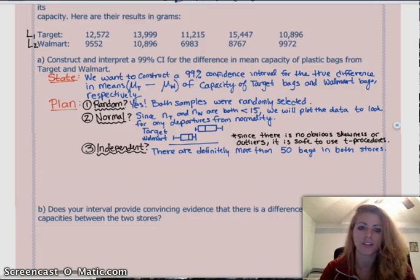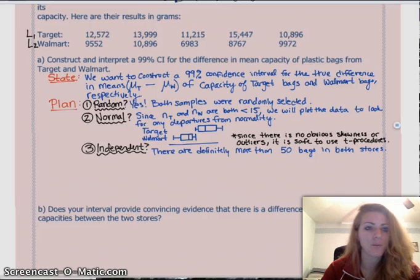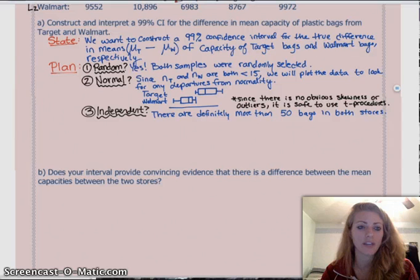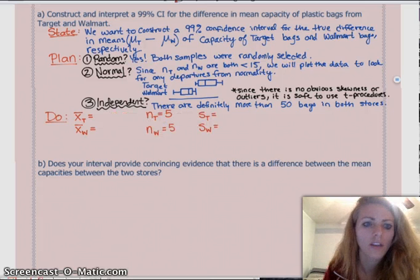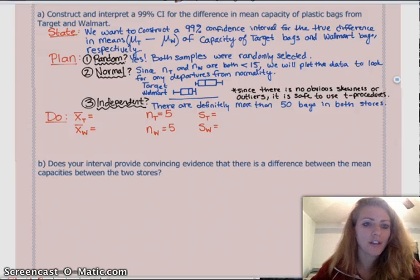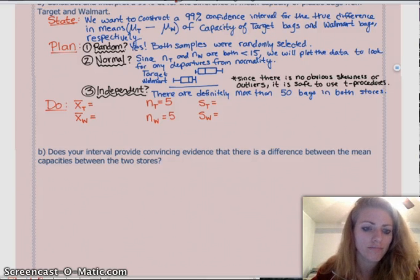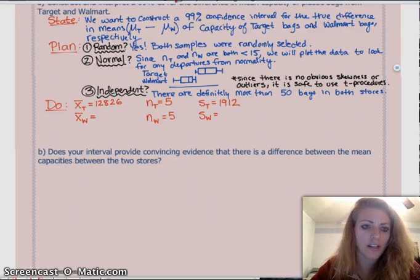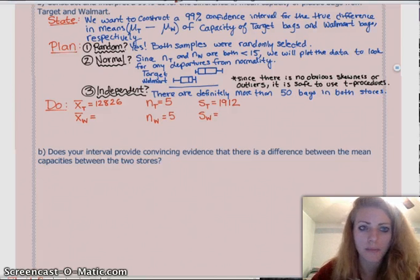So, really the biggest thing that you need in the do section is stating your x̄ and your standard deviations of the sample. And then what is your test statistic and your confidence interval, which we'll probably also get from the calculator. So, let's just include a little bit of work just to show that we know what we're doing. And then we can have the calculator do the rest of it for us. Using one-var stats to get x̄ and our standard deviation, we find Target has a mean of approximately 12,826 grams. And our standard deviation of Target is about 1,912. For our sample mean for Walmart, we found 9,234 grams. And then the standard deviation was 1,474 grams approximately.